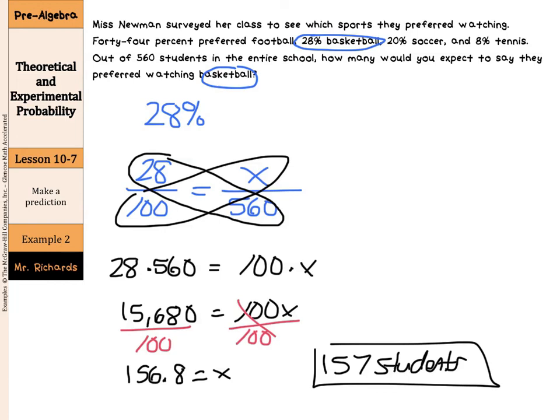In summary, 28% preferred basketball, so we could write that as 28 over 100, and on the other part of our proportion equals x over 560. We wrote the 560 on the bottom to match the 100%. The whole part is on the bottom, the part is on top. The 28% matches the part of the school that watches basketball. After cross-multiplying and solving, and then rounding, we answered 157 students.